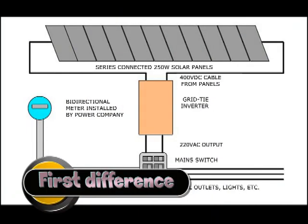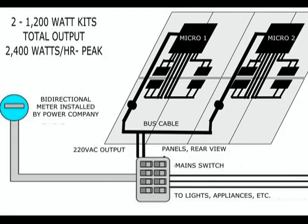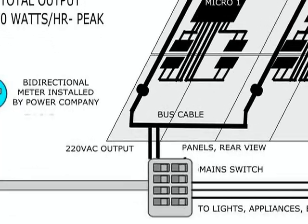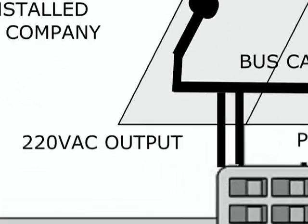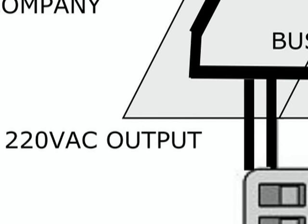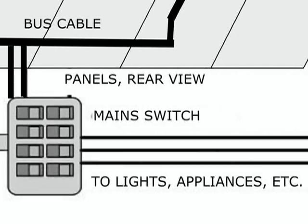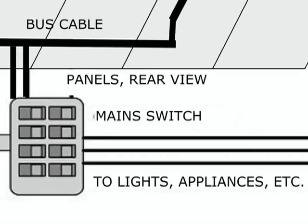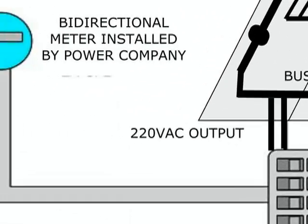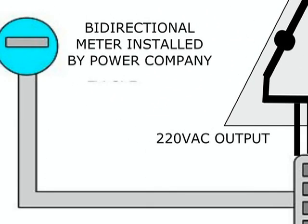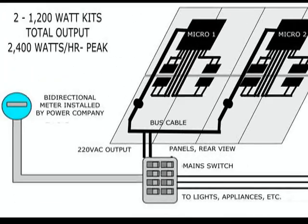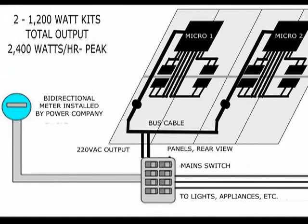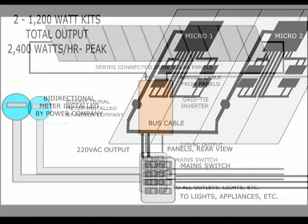The first difference between a central inverter inside the home and a roof-mounted micro inverter for each group of four panels is that in the case of micro inverters, the cables going down the roof carry AC current ready for either self-consumption or to be stored at the power company energy stock. Apparently there is no advantage to this, but we will soon see it really matters.